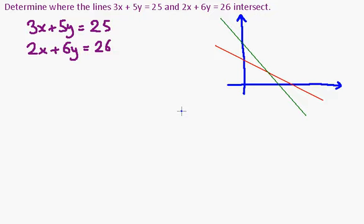I've drawn myself a little sketch on the right-hand side here to show what these two lines kind of look like and what's happening. The dark green line is 3x + 5y = 25 and the red line is 2x + 6y = 26.